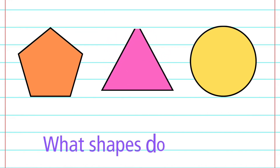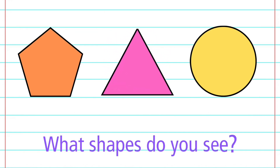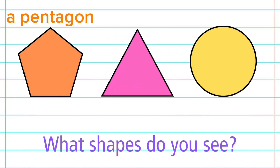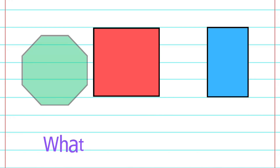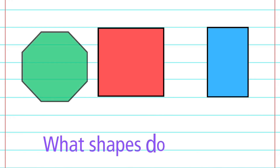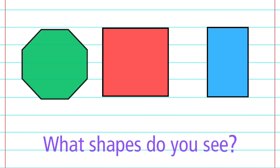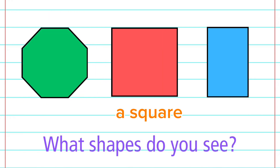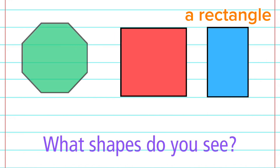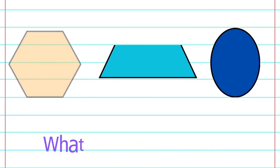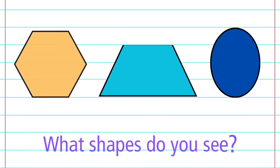What shapes do you see? A pentagon, a triangle, and a circle. What shapes do you see? An octagon, a square, and a rectangle.